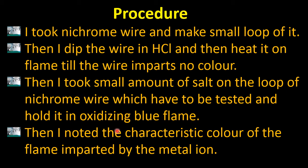I noted the characteristic color of the flame imparted by the metal ion. Students are often confused about whether to note the color of the flame or the metal ion — note the flame color. The metal ion imparts a color to the flame and the flame color changes. You can observe this in daily life too — fireworks are made up of metal ions, and that is why they produce beautiful colors when heated, which is exactly what we will observe in this practical.